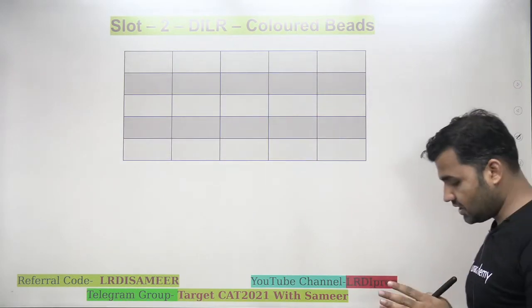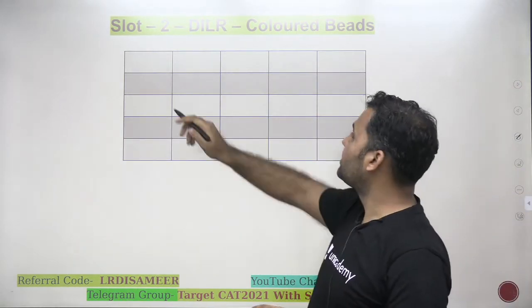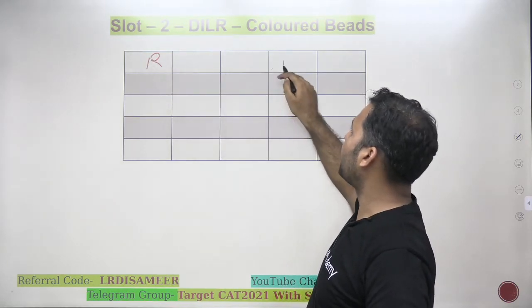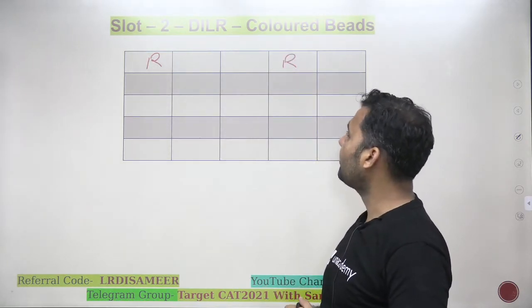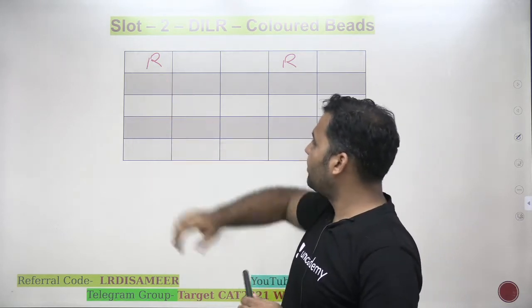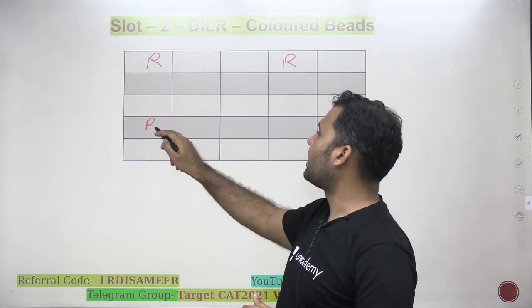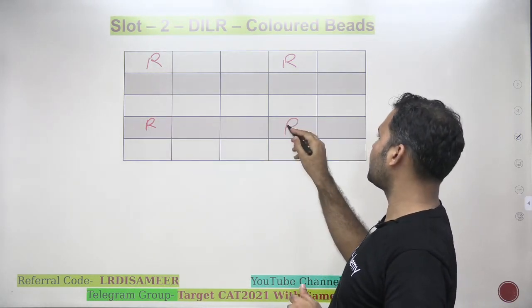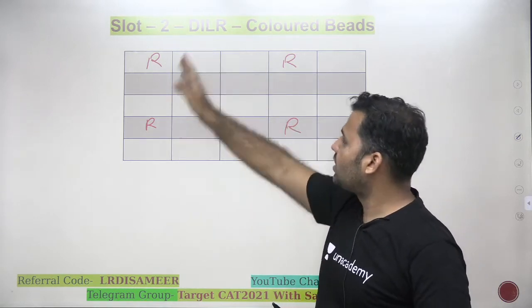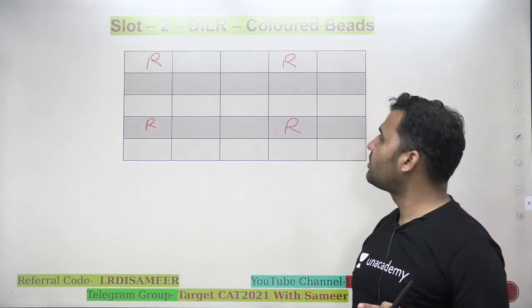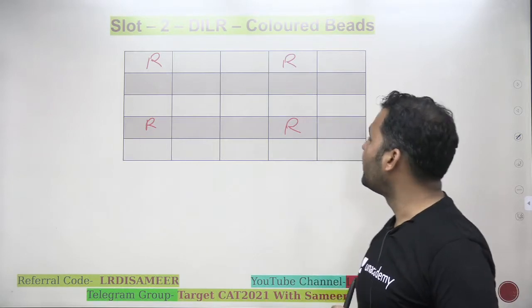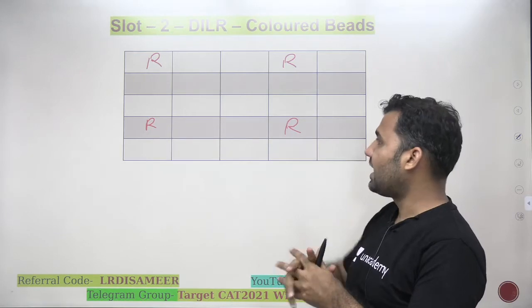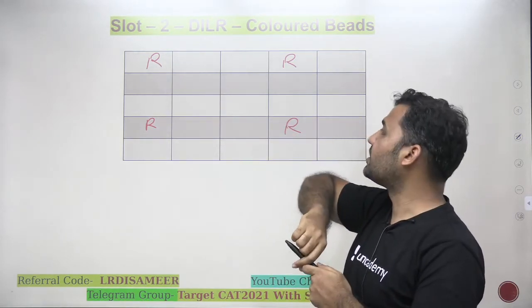To satisfy the condition row-wise, I place red here, and I can also place red here. Then, at a gap of two cells, I place red again. Column-wise, I also need to satisfy the condition. Row-wise and column-wise, I am not left with any additional positions because I need a gap of at least two cells between any two red beads.